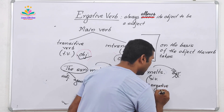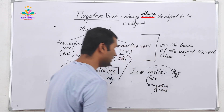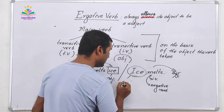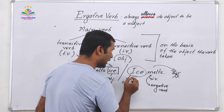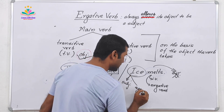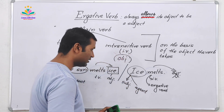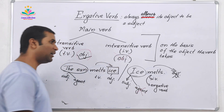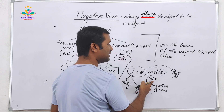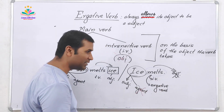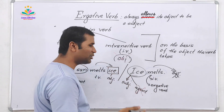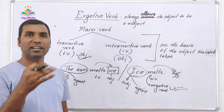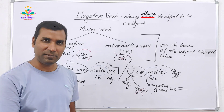Why is it an ergative verb? Because 'ice' — this noun — is here the object of the transitive use. No doubt it is now a subject, but it is not the agent. The agent is the sun. This is the feature of a transitive-ergative verb pair — in one sentence it is an object, and in another sentence the same noun becomes subject. Any such verb is an ergative verb.